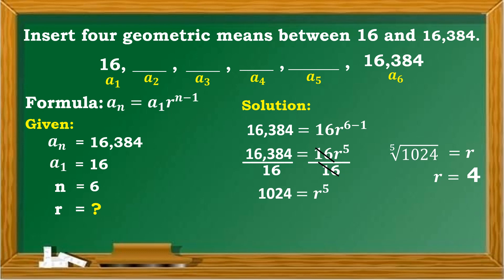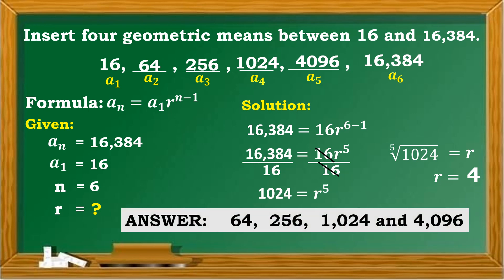Multiply 16 by 4 to get each successive term. 16 times 4 is 64; 64 times 4 is 256; 256 times 4 is 1,024; 1,024 times 4 is 4,096. Therefore, the 4 geometric means between 16 and 16,384 are 64, 256, 1,024, and 4,096.